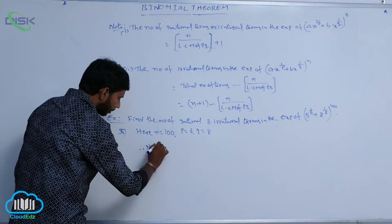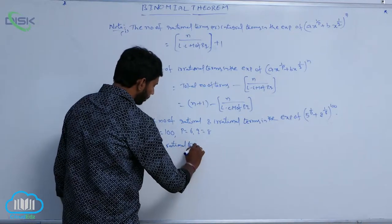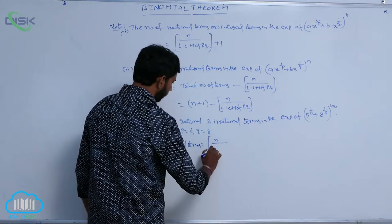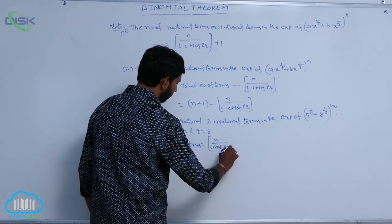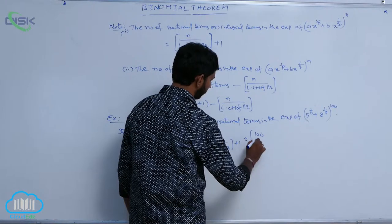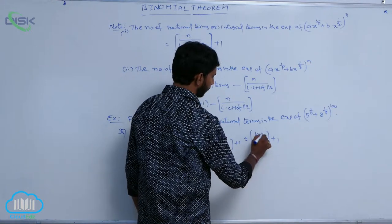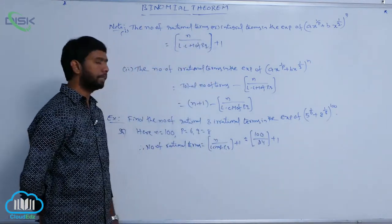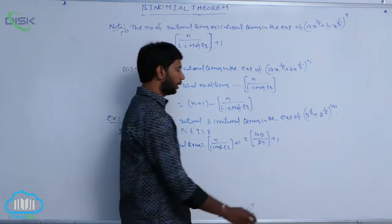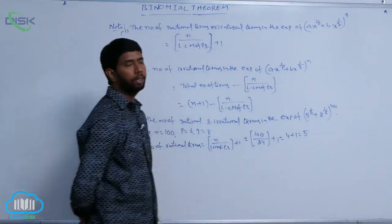Therefore, number of rational terms is equal to floor of n divided by LCM of p and q, plus 1. That equals floor of 100 divided by LCM of 6 and 8, which is 24, plus 1. 100 divided by 24 gives 4 point something, so the floor value is 4. Therefore, 4 plus 1 is equal to 5.